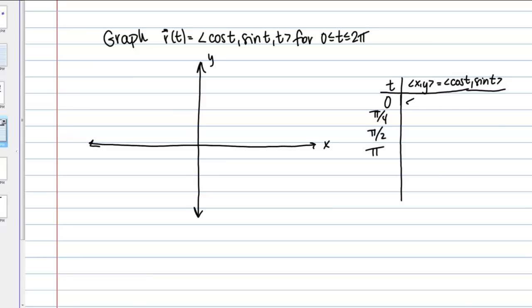Plugging in t = 0: cosine of 0 is 1, sine of 0 is 0, so we get the vector (1, 0). At pi over 4, we get (root 2 over 2, root 2 over 2). At pi over 2, cosine is 0 and sine is 1, giving (0, 1). And at pi, we get (negative 1, 0).